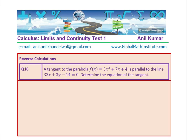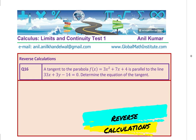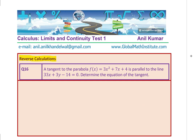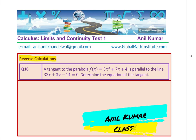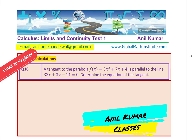The last question is regarding reverse calculations. A tangent to the parabola f of x equals 3x squared plus 7x plus 1 is parallel to the line 33x plus 3y minus 14 equals 0. Determine the equation of the tangent line. So we have quickly gone through these questions. I'd like you to pause the video and answer them one by one. In case you need my help, you can always send an email on the address given.